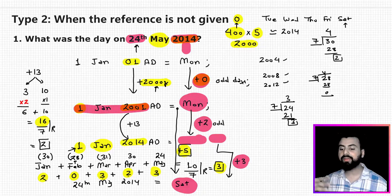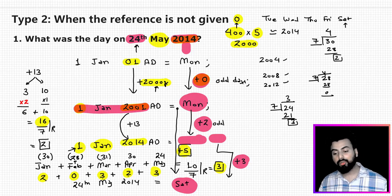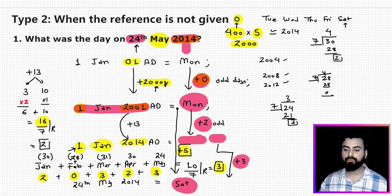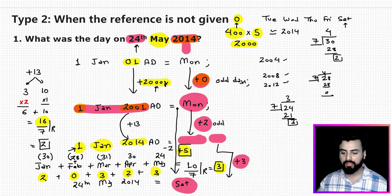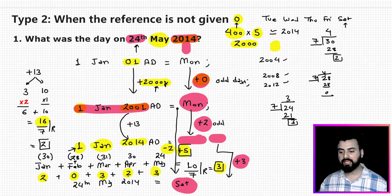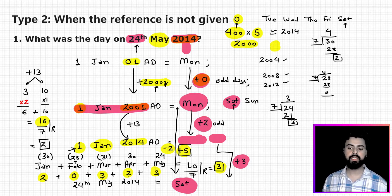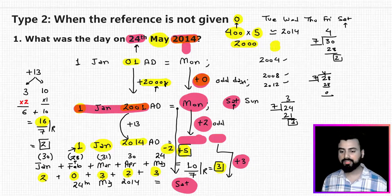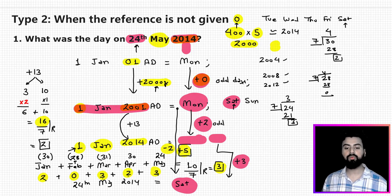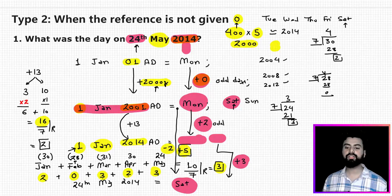If you're not comfortable going forward by 5 odd days, use the complementary shortcut with respect to 7: 7 minus 5 equals 2. Instead of going forward 5, go backward 2 days from Monday — leaving Sunday, you land on Saturday — same answer. This is the approach for type 2 problems when no reference is given. In the next lecture, we'll learn how to find repetition of calendars. Please like, share, and subscribe. Thank you and have a nice day.